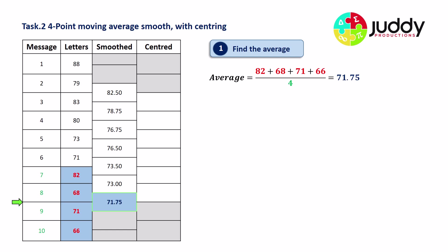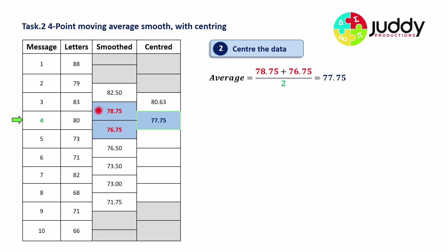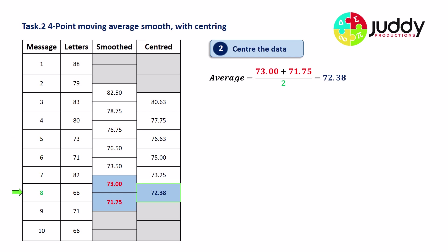Since we can't graph time series with point-fives, we repeat the centering process. We average adjacent smooth values: 82.5 and 78.75 give a centered value of 80.63 against message three; 78.75 and 76.75 give 77.75 against message four. We continue averaging pairs until the final smooth values 73.0 and 71.75 give a centered value of 72.38 against message eight.